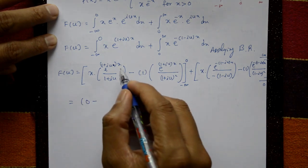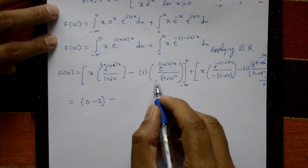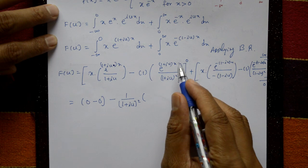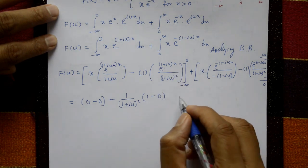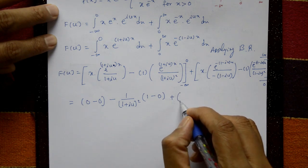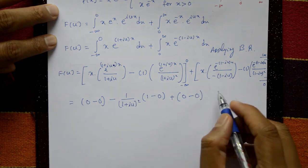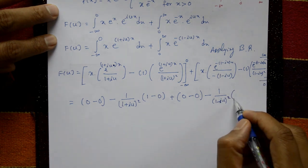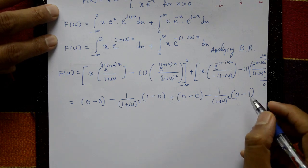Now substitute limits. At x = 0: 0 times anything equals 0. At x = infinity: e^(infinity) = 0 for the decaying terms. Taking 1/(1+iu)² outside: put x = 0 gives e^0 = 1; e^(infinity) = 0. For the second part, 1/(1-iu)² is constant outside. Put x = infinity: result is 0. Put x = 0: e^0 = 1.